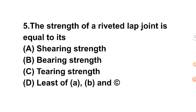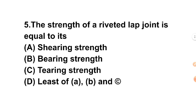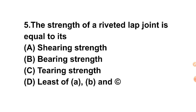Question 5: The strength of a riveted lap joint is equal to — the least of shearing strength, bearing strength, and tearing strength. There are three strengths, and we calculate the least of the three. The answer is D: least of shearing strength, bearing strength, and tearing strength.